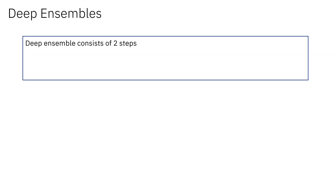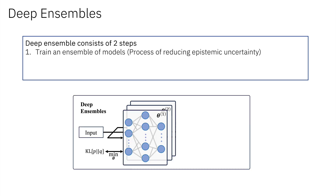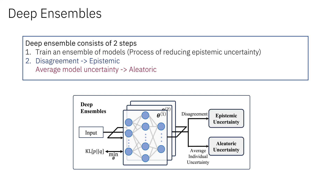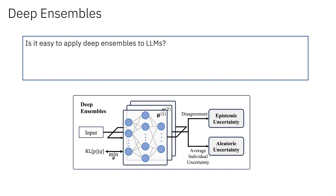To sum up, deep ensembles decompose uncertainties via two steps. First, train an ensemble of models, which can be regarded as the process of minimizing the epistemic uncertainty for each model. Second, calculate the model disagreement as the epistemic uncertainty, and the average model entropy as the aleatory uncertainty. Now, is it easy to directly apply deep ensembles to LLMs? The answer is no, because it is costly to train multiple LLMs.